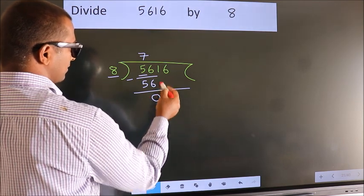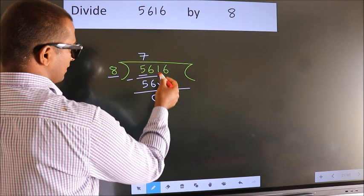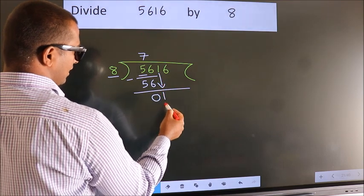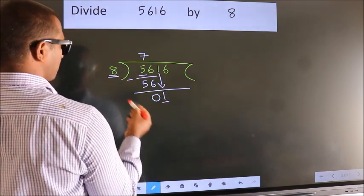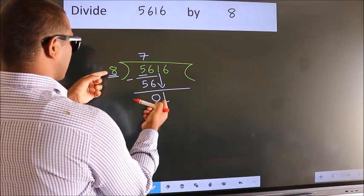After this, bring down the beside number. So, 1 down. Here we have 1, here 8. 1 is smaller than 8.